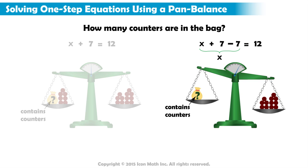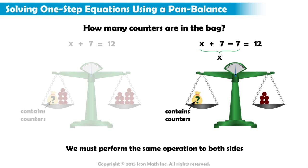This is because when we perform an operation to one side of an equation or pan balance, we must perform the same operation to the other side. We must subtract 7 counters from the right side of the pan balance and subtract 7 from the right side of the equation as well.